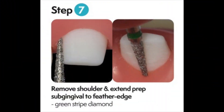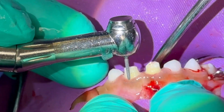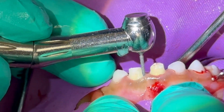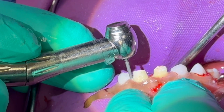Finally, we're going to take a flame-shaped diamond burr and go around to remove the shoulder or chamfer around our preparations, creating a feathered-edge smooth margin as we transition from the supragingival to subgingival portion. One of the biggest critical errors here is over-tapering or under-tapering, causing an undercut or excessive taper that does not allow for adequate retention and resistance form of the preparation.